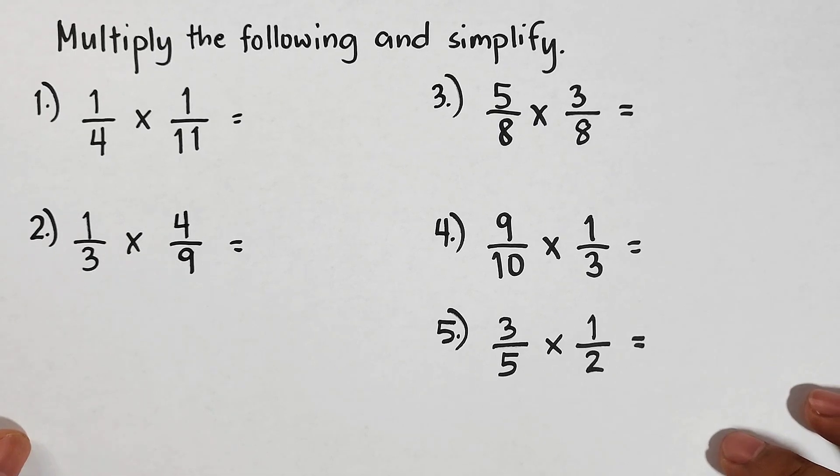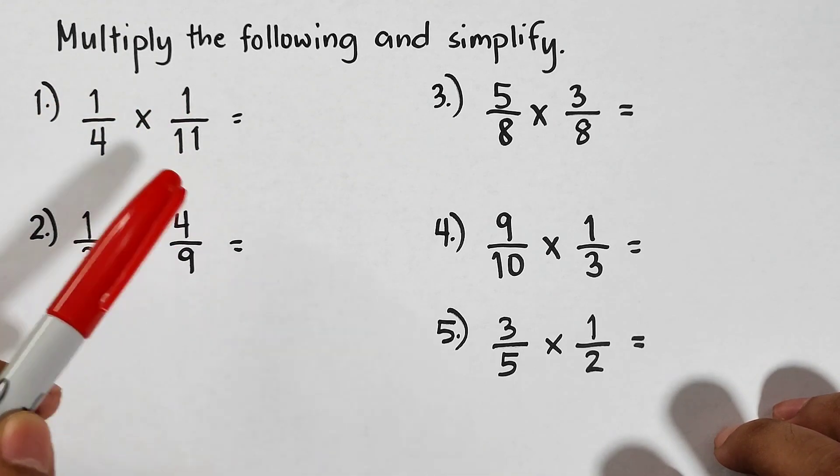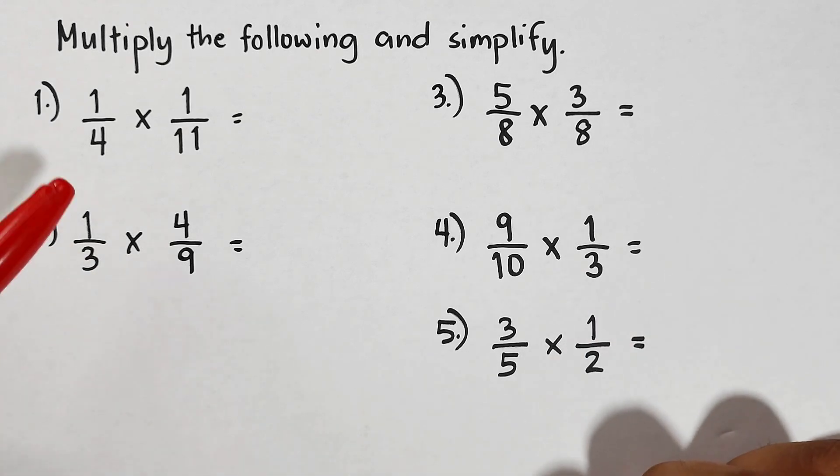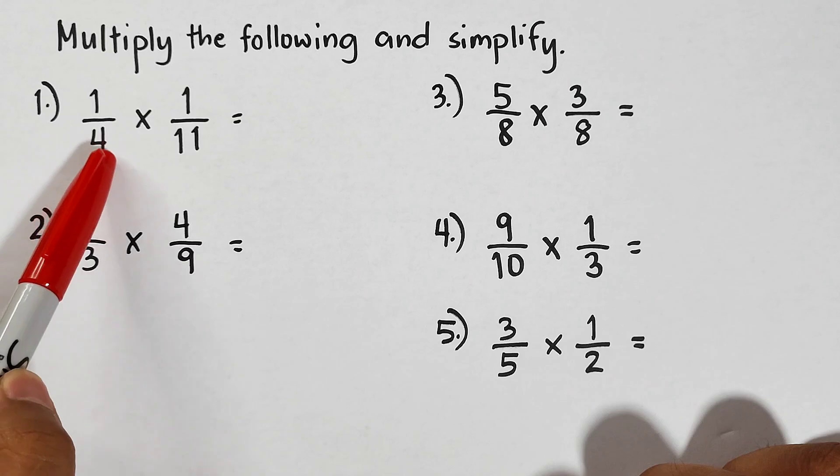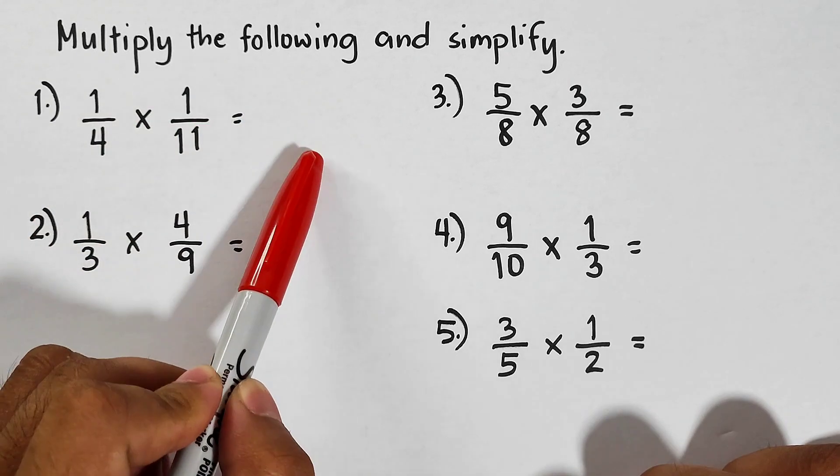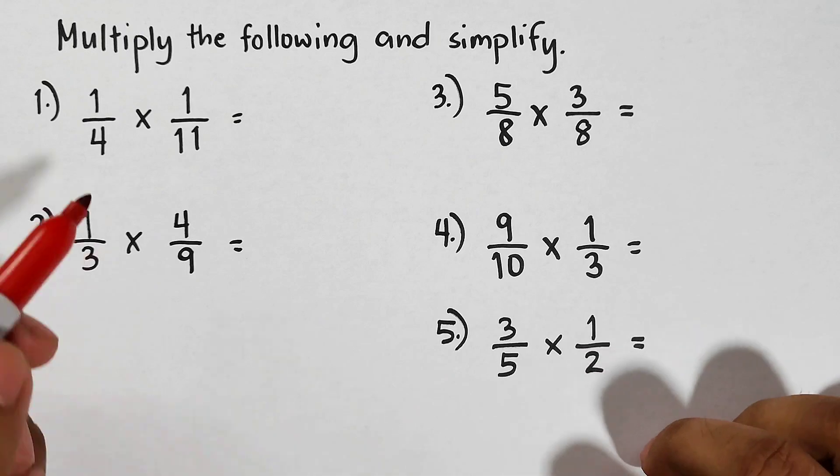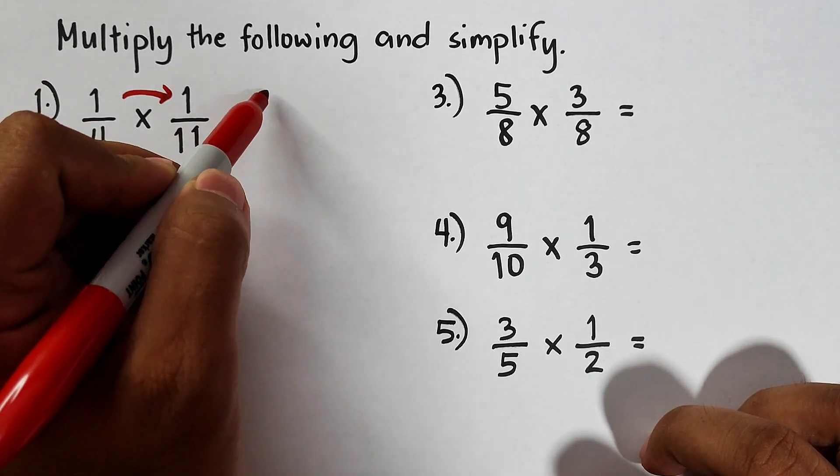Let's start with item number one. In number one we are given 1/4 times 1/11. By the way, how do we multiply fractions? What we need to do is multiply the numerators and the denominators, and at the end of it we will simplify. So let's try with this example. We have 1 times 1, that would be 1.